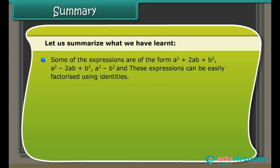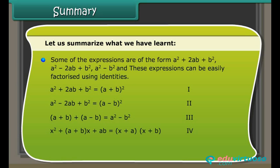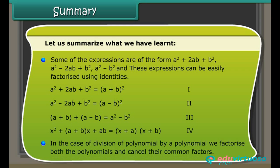Some expressions of the form a² + 2ab + b², a² − 2ab + b², or a² − b² can be easily factorized using standard identities. In the case of division of a polynomial by another polynomial, we factorize both polynomials and cancel their common factors.